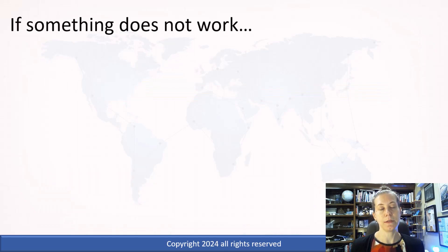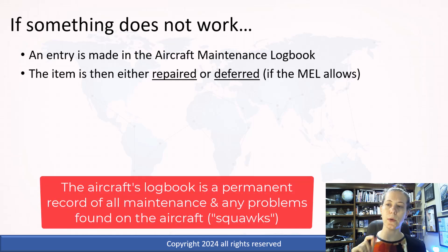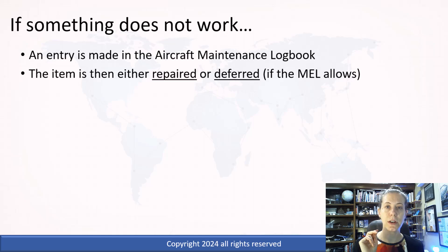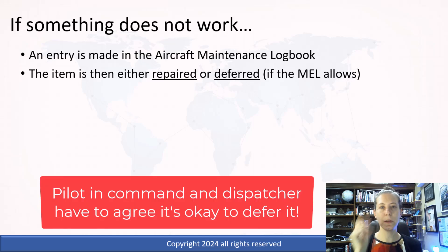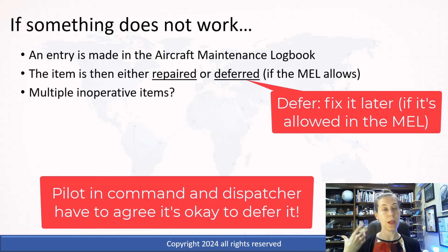So what do we do with all this? If something doesn't work, we are going to make an entry in the aircraft maintenance logbook — some are digital, some might still be paper. Then maintenance is going to decide: are we going to fix the item, or are we going to defer the item? If the minimum equipment list allows it, and it's okay with the pilots, dispatcher, and maintenance control — if all the people agree that it's okay and it's safe — then we could defer it.